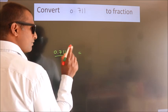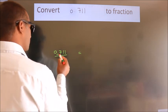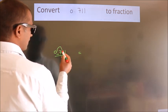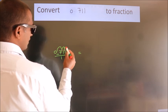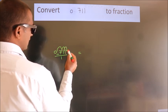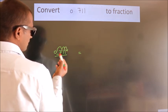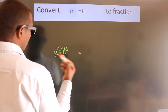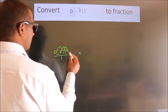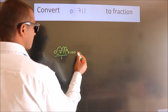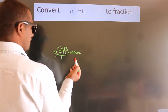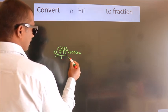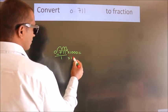we have to move the decimal after 1, 2, 3 numbers. To move this decimal after 3 numbers, we have to multiply it with 1000. Whatever number you are multiplying in the numerator, in the denominator also do the same.